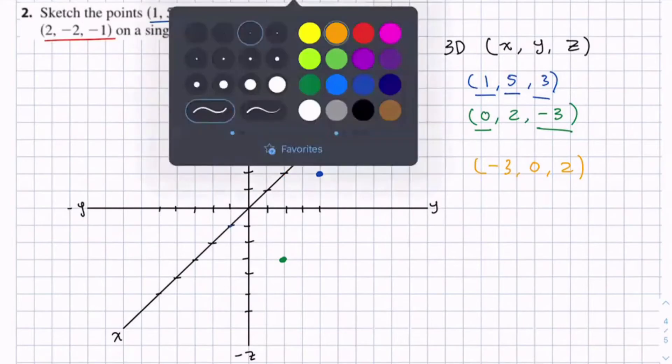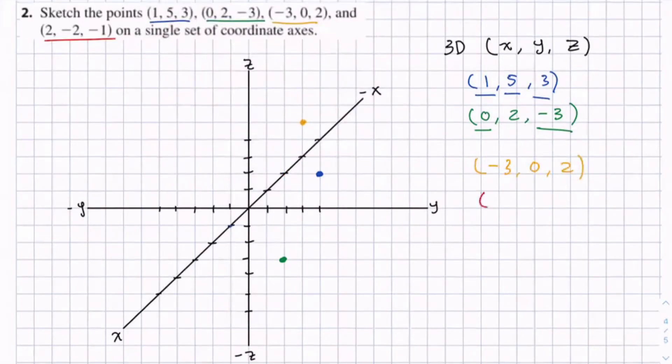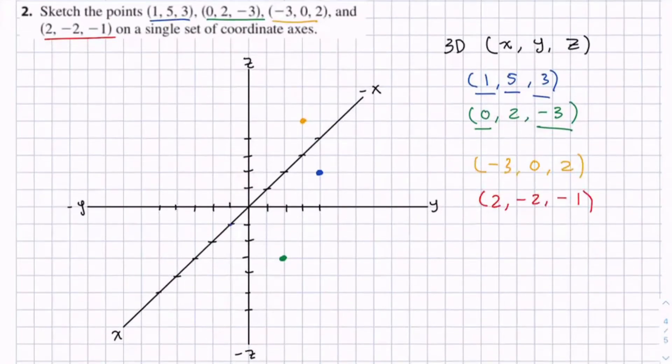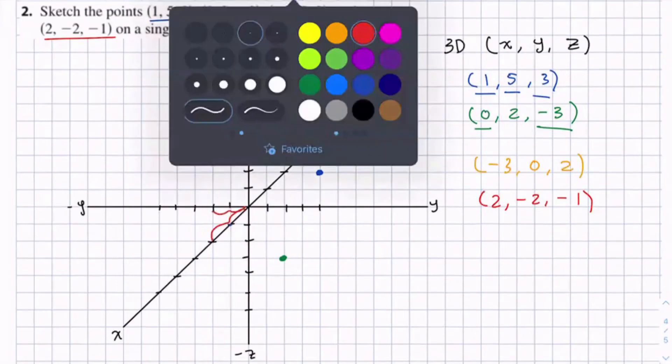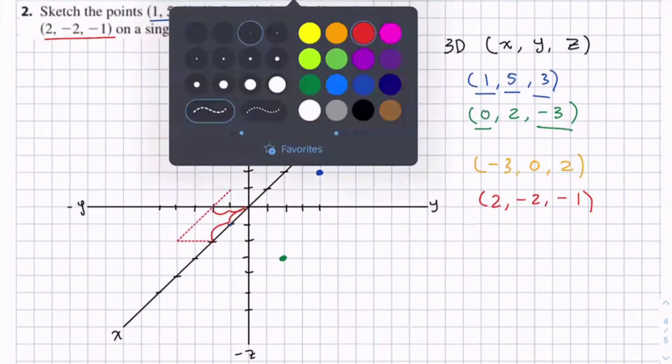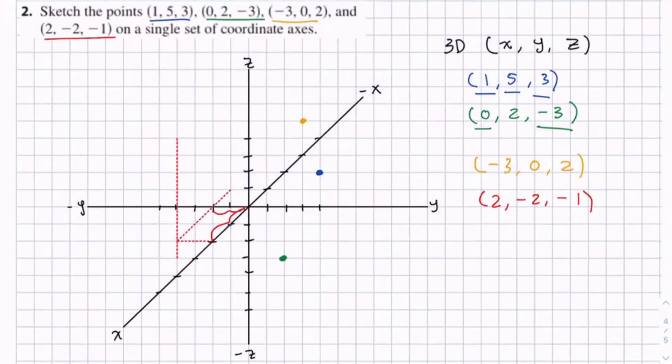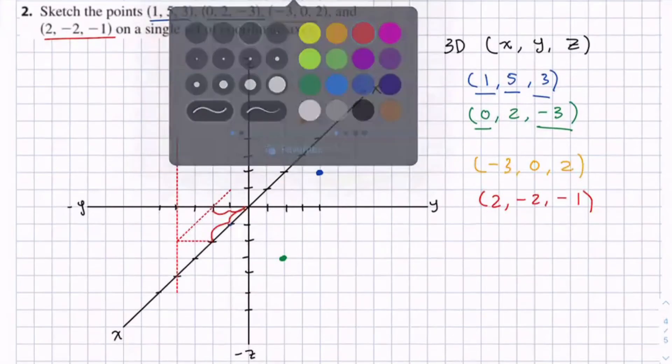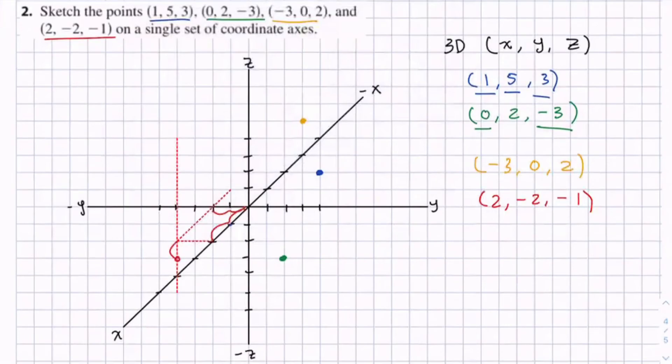So for our final point (2, -2, -1), we travel positive 2 in the x-direction, negative 2 in the y. We can draw where this point lies on the x-y plane, and then draw that vertical z component. And the z goes down negative 1. We have a point right here.